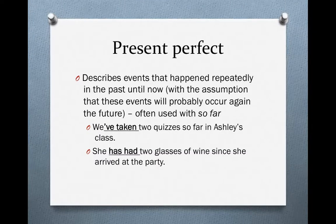The present perfect can also be used to describe events that happened repeatedly in the past until now, and we can safely assume that these events will continue to happen in the future — they will probably occur again. In these cases, we often use 'so far.' Look at the sentence: 'We've taken two quizzes so far in Ashley's class.' We've formed the present perfect using 'have' plus the past participle of 'take': taken. This means we took two quizzes in the past and will probably take more. We're not taking a quiz right now, but we're probably not finished with this event.